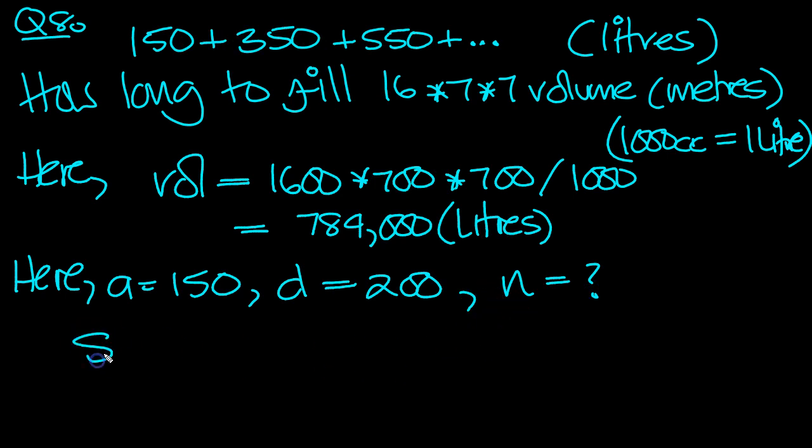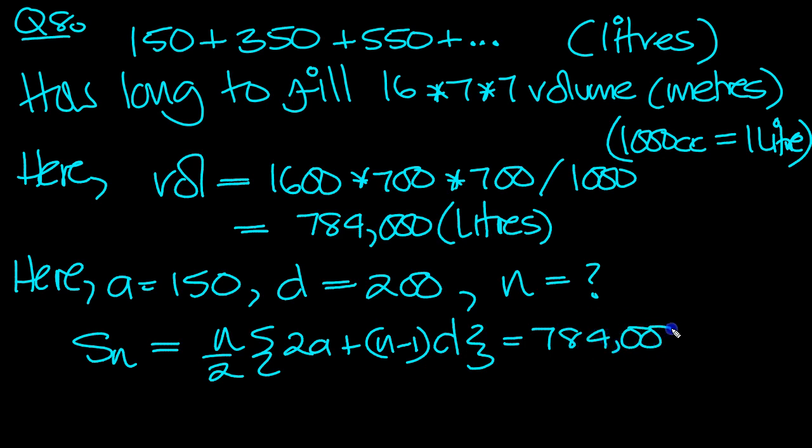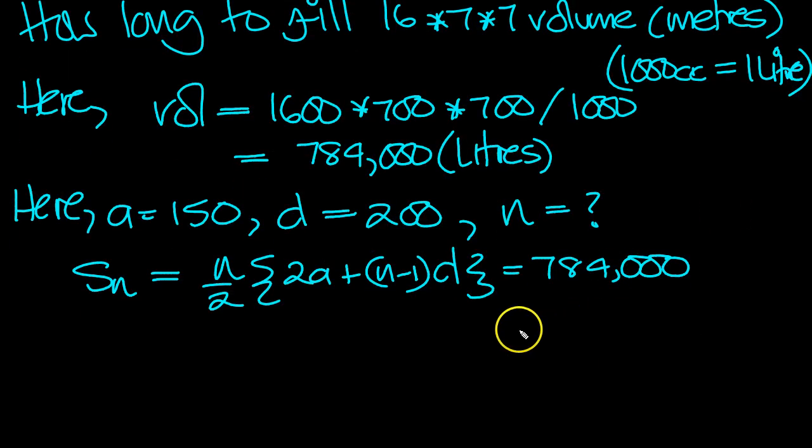So the sum of the first n terms, the sum of these first n terms, which would take n hours, will be n over 2, 2a, the formula, plus n minus 1 times d, and that needs to equal 784,000. So put the numbers in then, we'll get a quadratic again, and hopefully we can solve it.